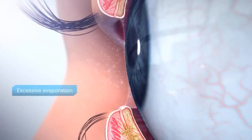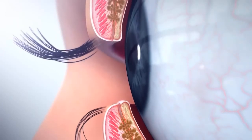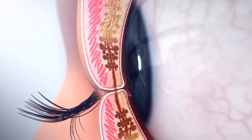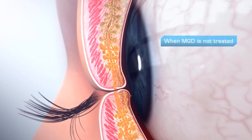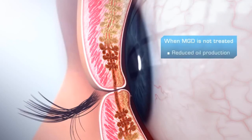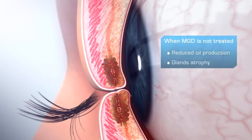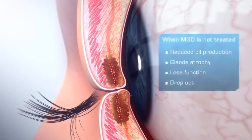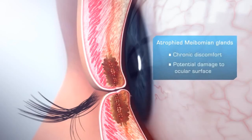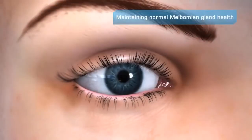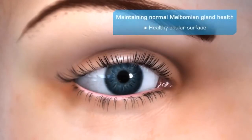Excessive evaporation of the tear film due to a poor lipid layer from MGD can lead to increasing discomfort, poor vision, inflamed lid margin, and damage to the ocular surface. When MGD is not treated, blockage of the glands results in downregulation of oil production, eventually causing the glands to atrophy, lose function, and drop out. Completely atrophied meibomian glands lead to chronic discomfort and potentially sight-threatening damage to the ocular surface. Maintaining normal meibomian gland health and function is critical to the long-term maintenance of ocular surface health and good vision.